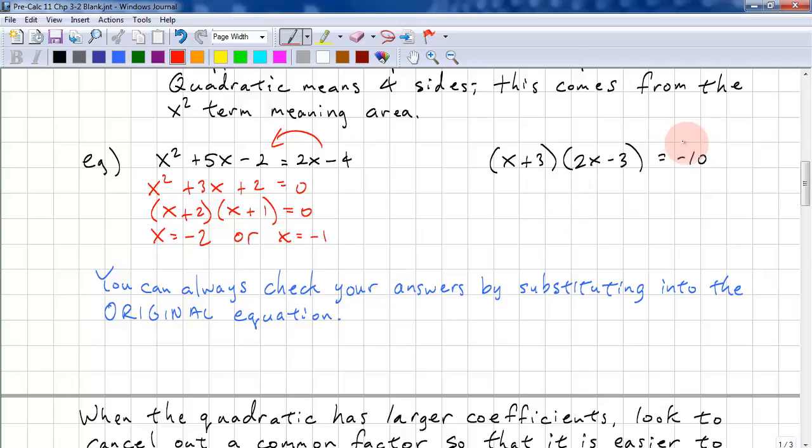This time we just have to move the negative 10 over, but we also have to expand this by using FOIL. So we have 2x squared. We have 2x times 3, that's 6x. And negative 3 times x, that's negative 3x, so that's positive 3x. We have a negative 9. This 10 becomes positive 10. 10 minus 9 is 1.